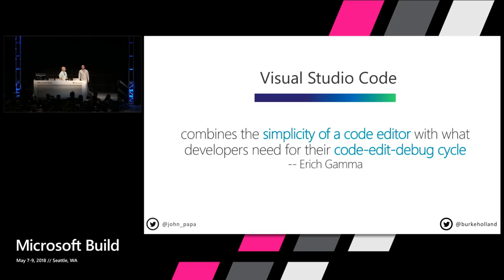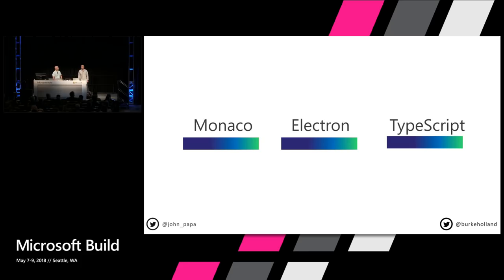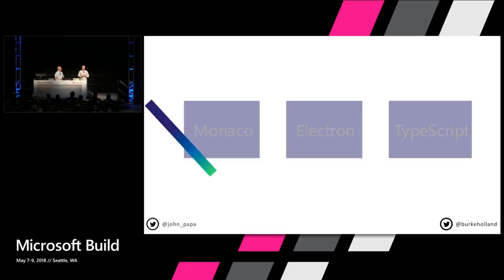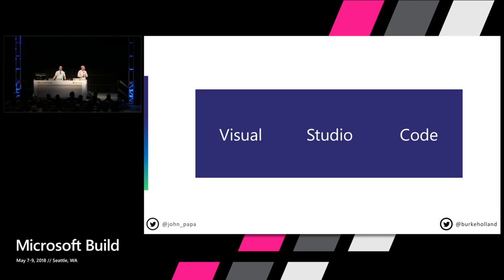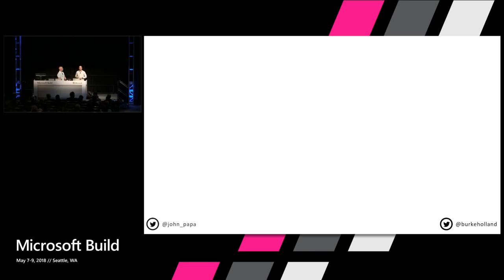Eric Gamma created this tool along with Chris Diaz and a bunch of other great people on the VS Code team. We take three pieces that they used to put it together: Monaco, which runs with Electron — allowing us to have the desktop experience inside of our tool — and then TypeScript, specifically the TypeScript server, helping us get all sorts of great coding features even when we're using JavaScript. That's what we end up with: Visual Studio Code.